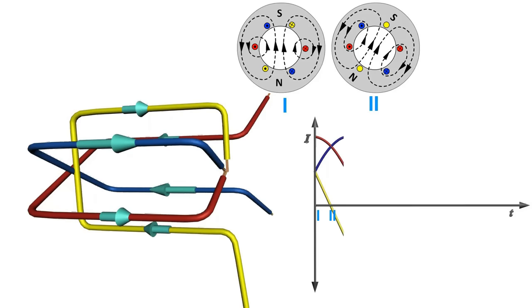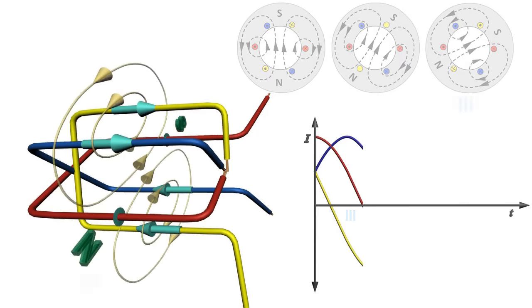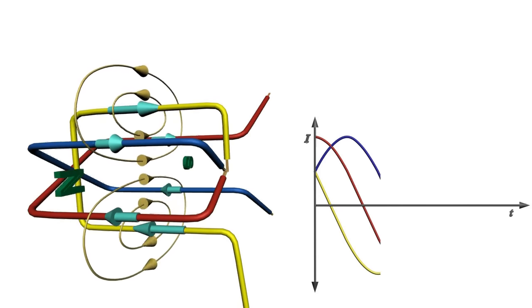You can notice that the orientation of magnetic field changes with current, but its magnitude remains the same. From these three positions, it's clear that it is like a magnetic field of uniform strength rotating.